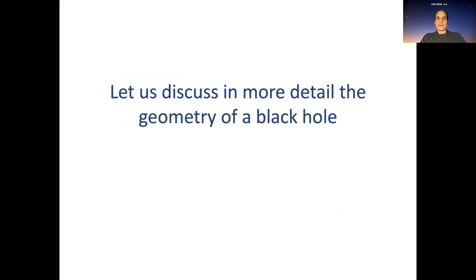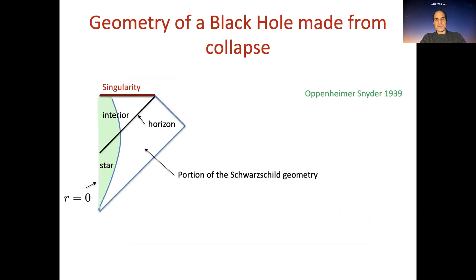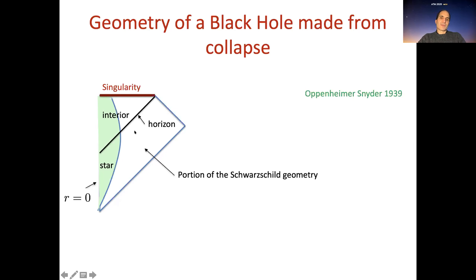Let's discuss in more detail the geometry of a black hole. First, let's discuss the geometry of a black hole made from collapse — imagine a star that collapses and forms a black hole. This is described by a certain spacetime geometry, and a convenient way to represent it is the so-called Penrose diagram. At each point on this diagram there is a two-dimensional sphere, so we're describing spherically symmetric collapse. The vertical direction is essentially time, the horizontal direction is roughly the radial position, and the vertical line on the left is r equal to zero — the center of the star — while the region on the right is flat space far away.